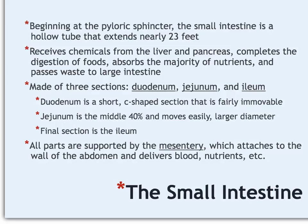The final job of the small intestine is to pass waste into the large intestine. The small intestine has three parts, starting from closest to the stomach and working toward the large intestine. The first part is called the duodenum — it's a pretty short section shaped like a C. It attaches to the stomach at the top and leads into the jejunum, and it's pretty well anchored within the abdomen so it doesn't shift around.